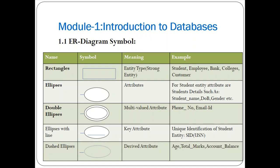The next symbol is a double ellipse, called a multi-valued attribute. A multi-valued attribute means a single attribute can have more than one value. For example, phone number and email ID are multi-valued attributes because one student can have more than one phone number and more than one email ID.